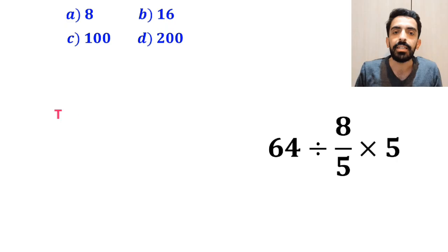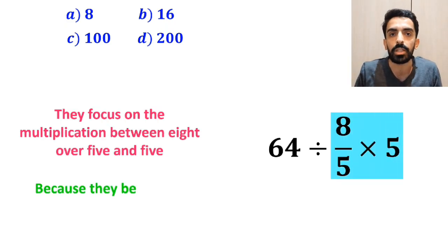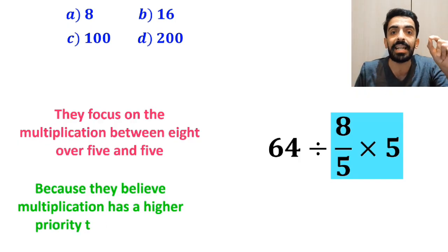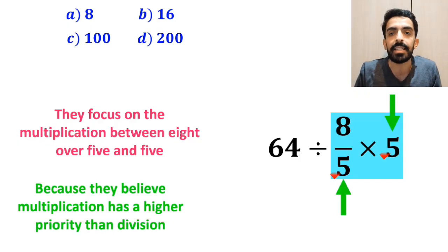In the next step, they focus on the multiplication between 8 over 5 and 5, because they believe multiplication has a higher priority than division. As you can see in the image, they simply cancel out the fives.